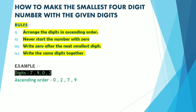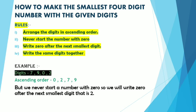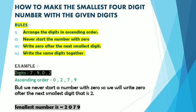Example: there are 4 digits — 7, 9, 0, and 2. In ascending order: 0, 2, 7, 9. But we never start a number with 0, so we will write 0 after the next smallest digit, that is 2. So the smallest number is 2079.